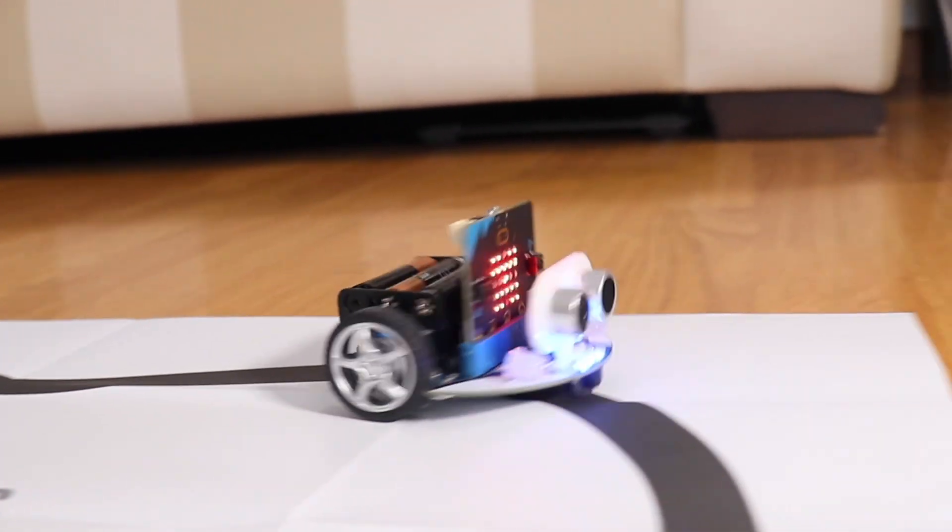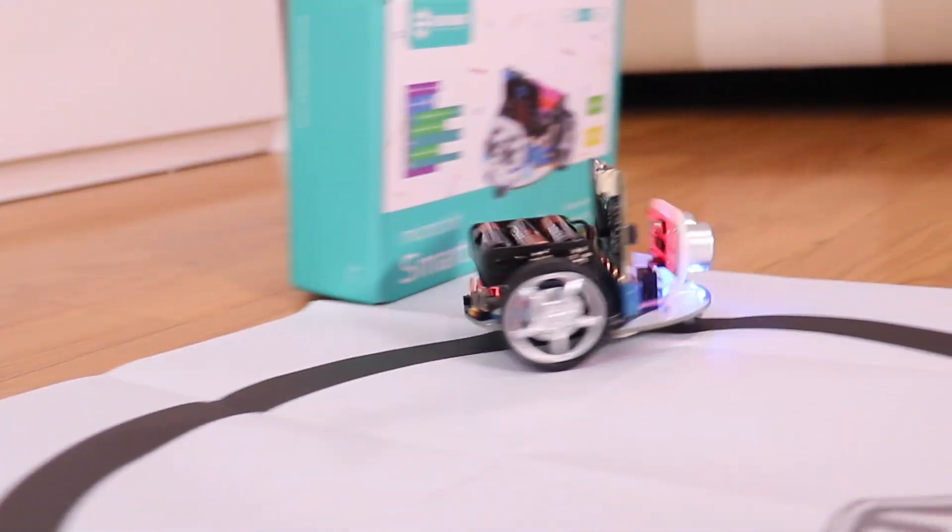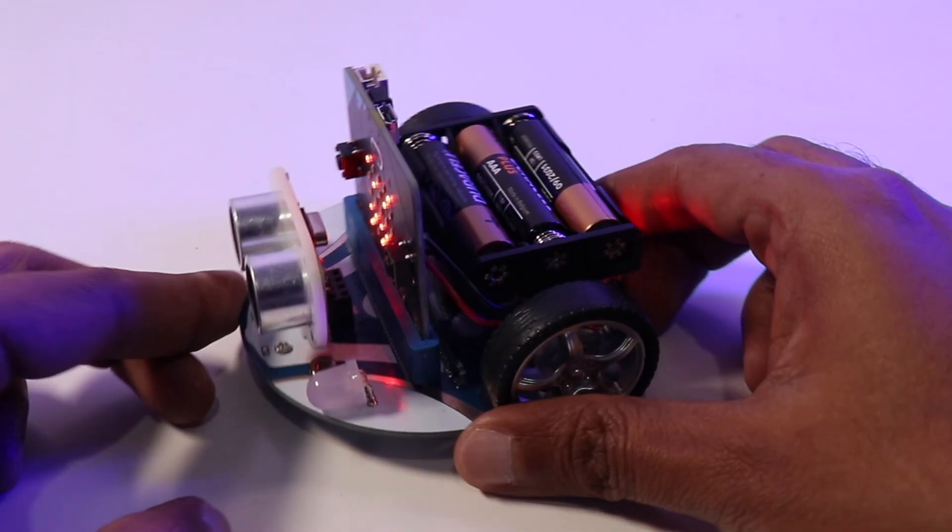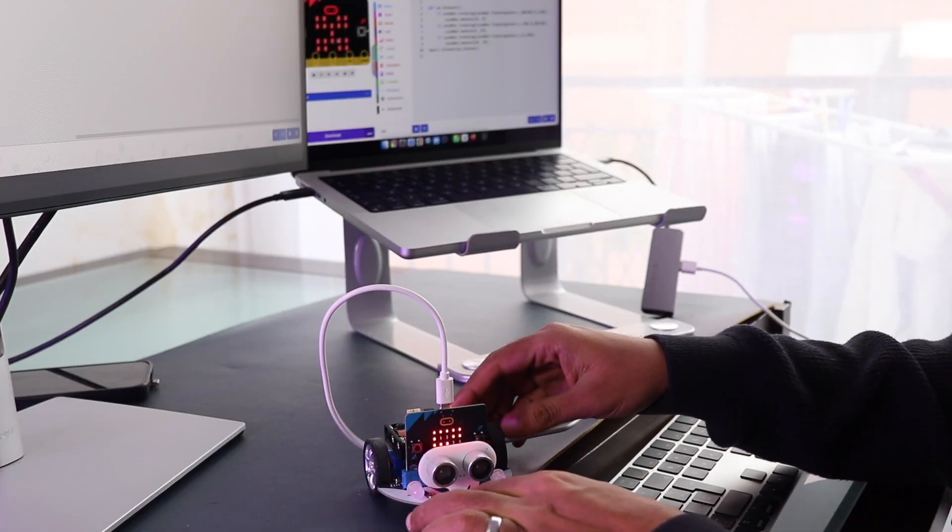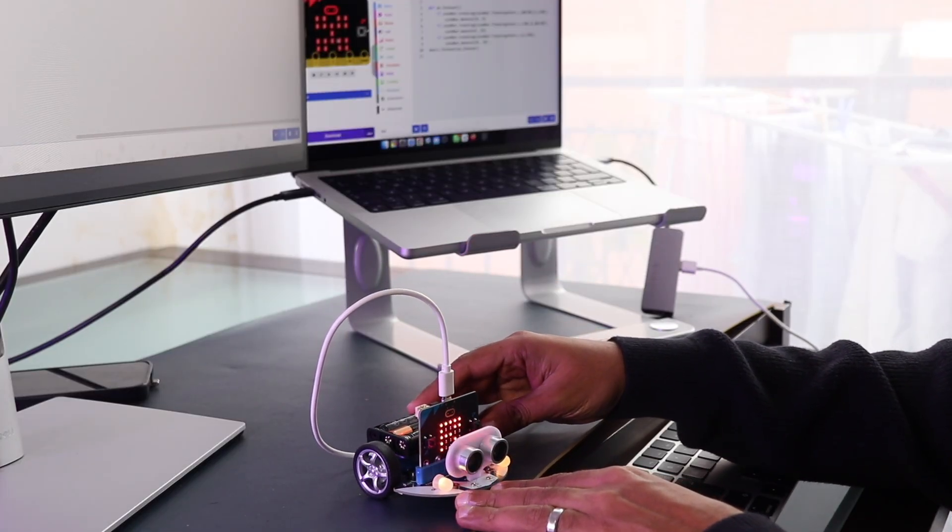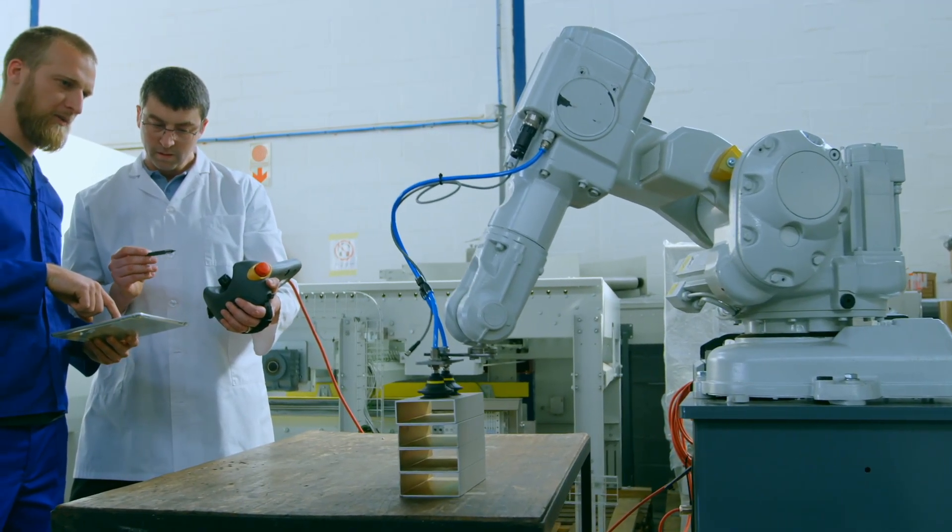This project combines everything we've talked about, using a microcontroller to read a sensor (digital input) and control motors (digital output) based on that input. This iterative learning approach, starting with foundational knowledge and building upon it with progressively more complex projects, is the most effective way to learn.